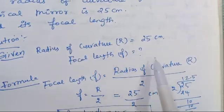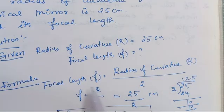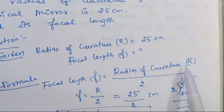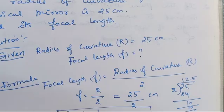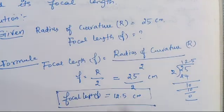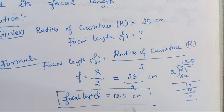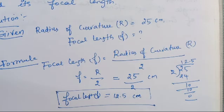So radius is given, focal length we want to calculate. Formula: focal length equals radius of curvature by 2, so F equals R by 2. Focal length equals 12.5 cm. That's it.